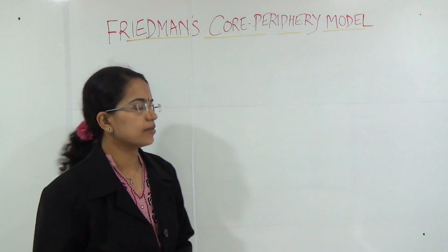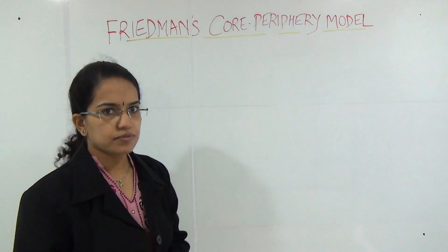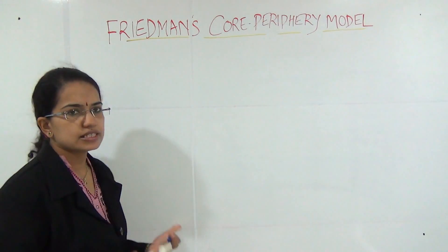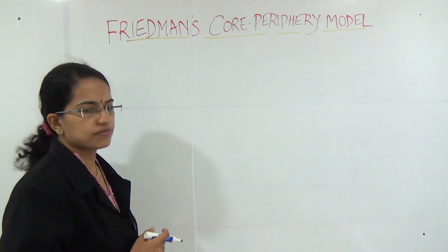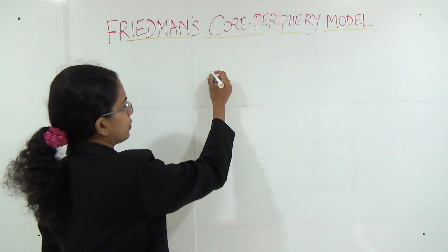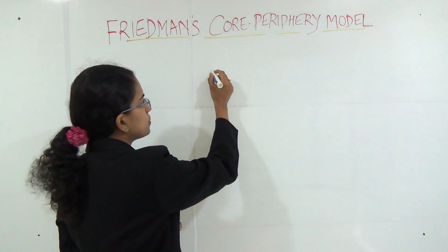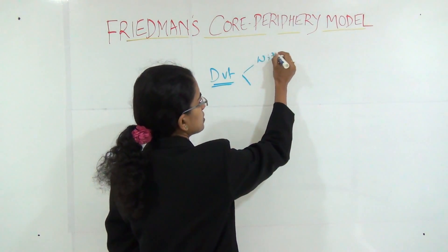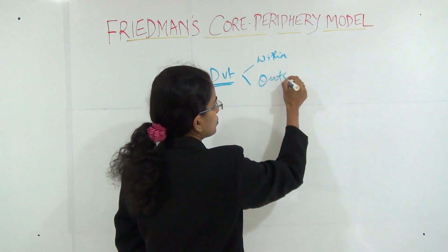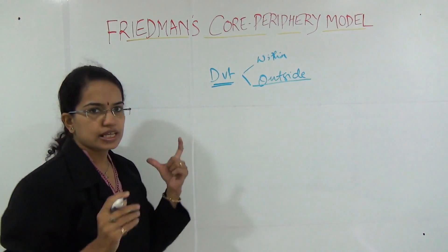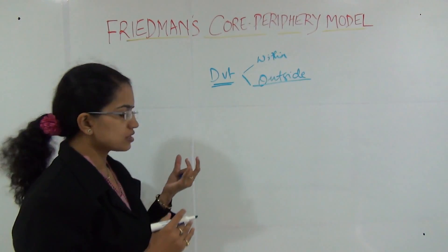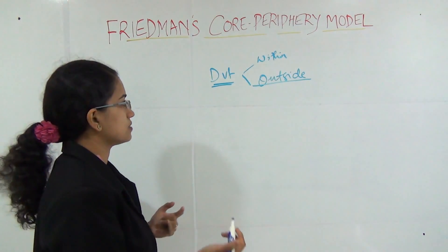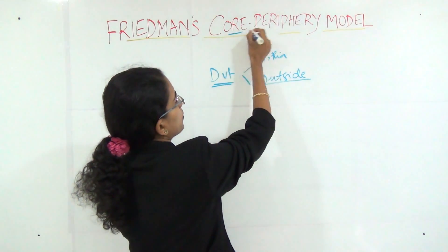Welcome to today's class. Today we will be talking about the concept of Friedman's core-periphery model. Let's first understand what was the basis on which Friedman gave this model. His basic element was that for any region, we need to study development from two perspectives: within the region and outside the region. He laid down the concept of core and periphery.